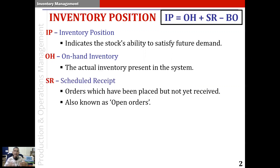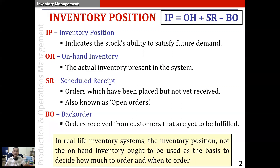To the OH, we should add the scheduled receipts. Scheduled receipts are the orders which have been placed with our suppliers but are yet to be received. They are also known as open orders. From the inventory position, we must also subtract back orders. Back orders are orders received from the customers that are yet to be fulfilled.